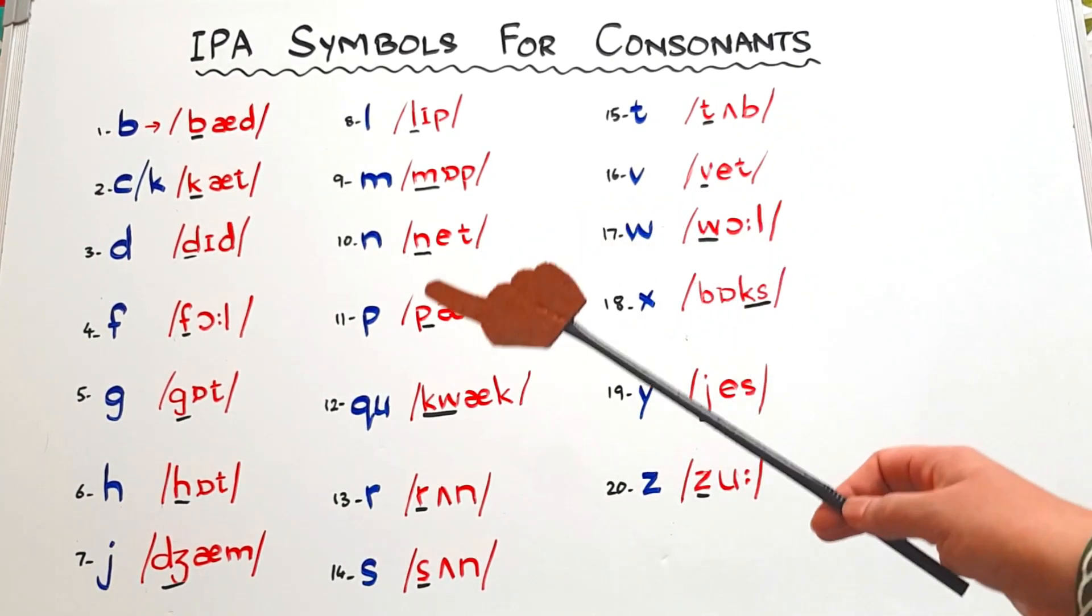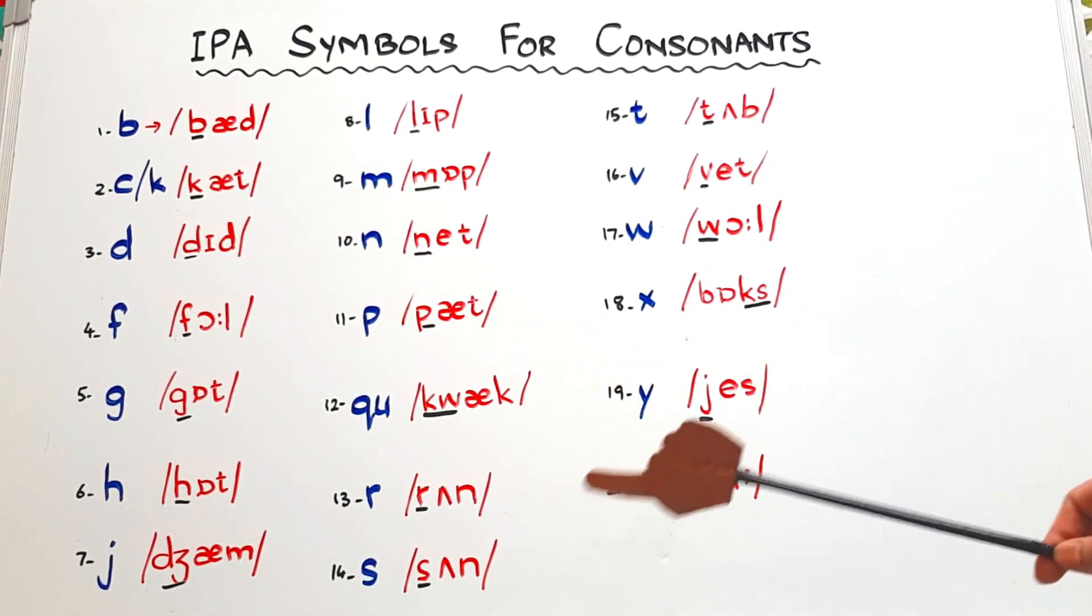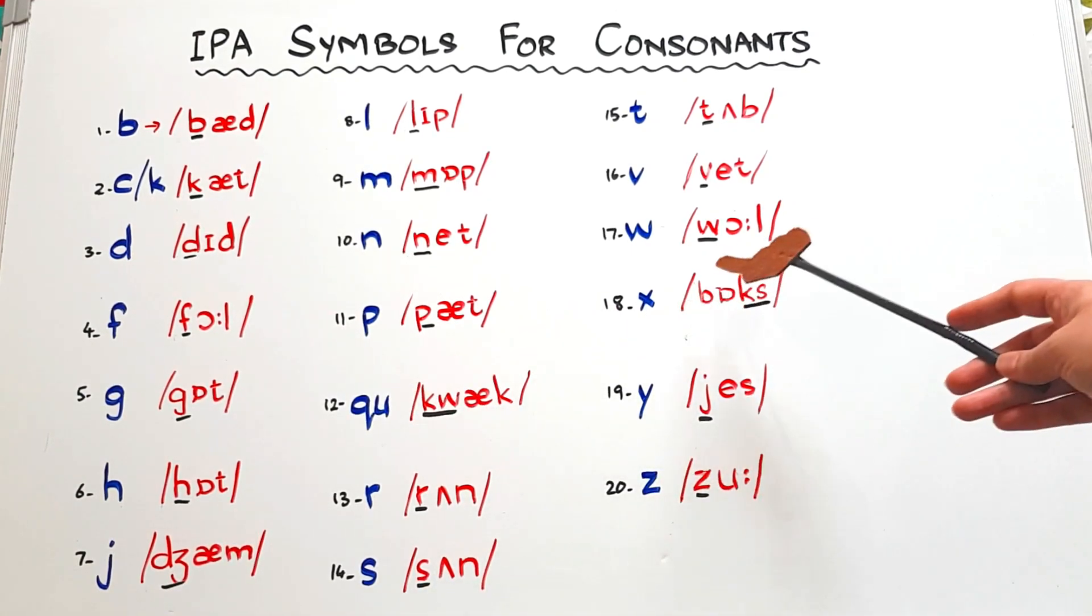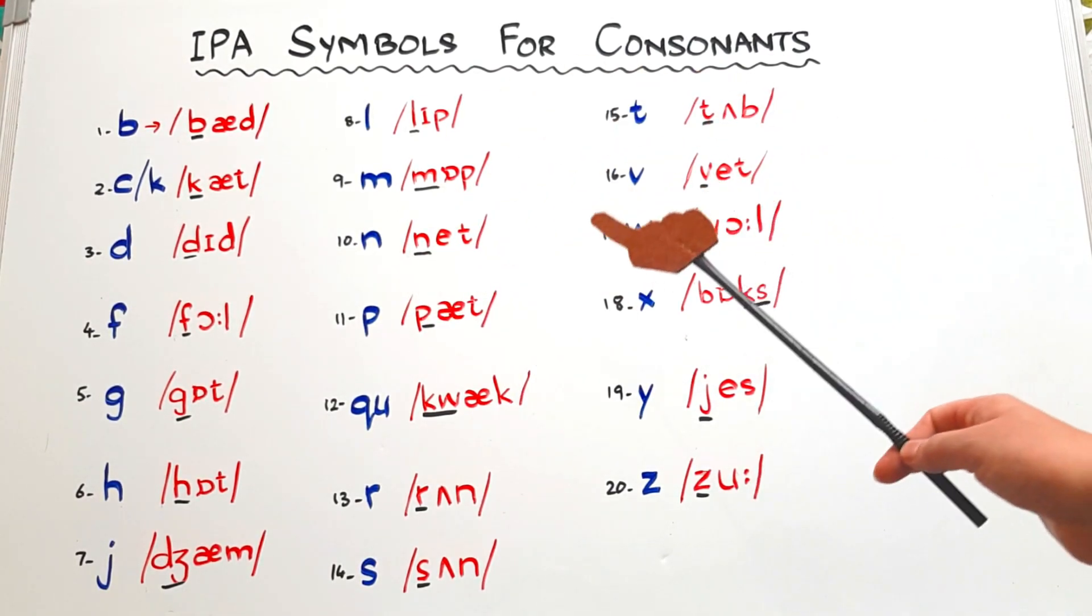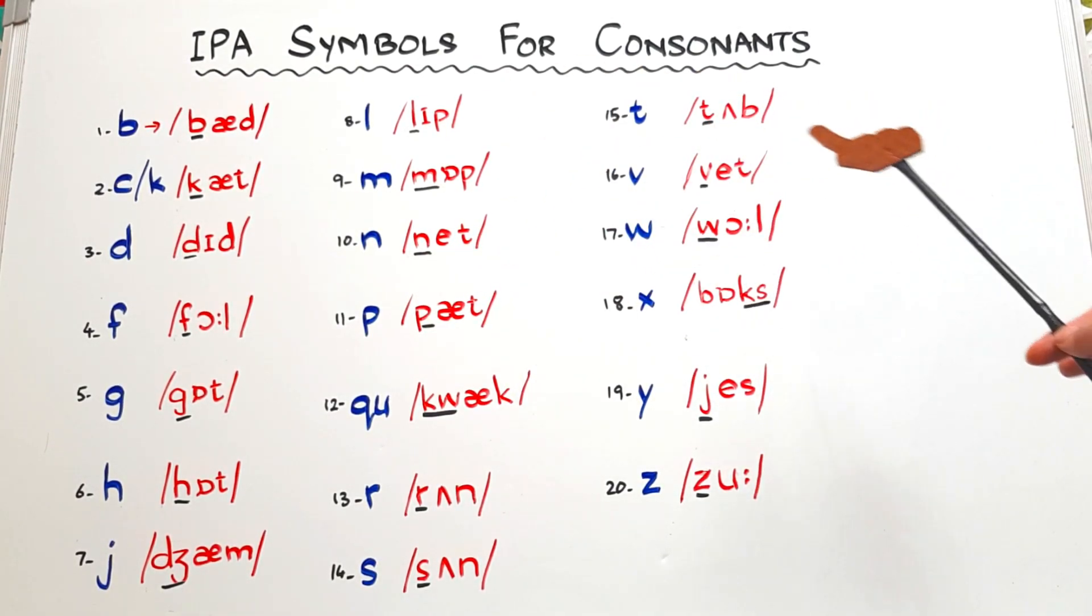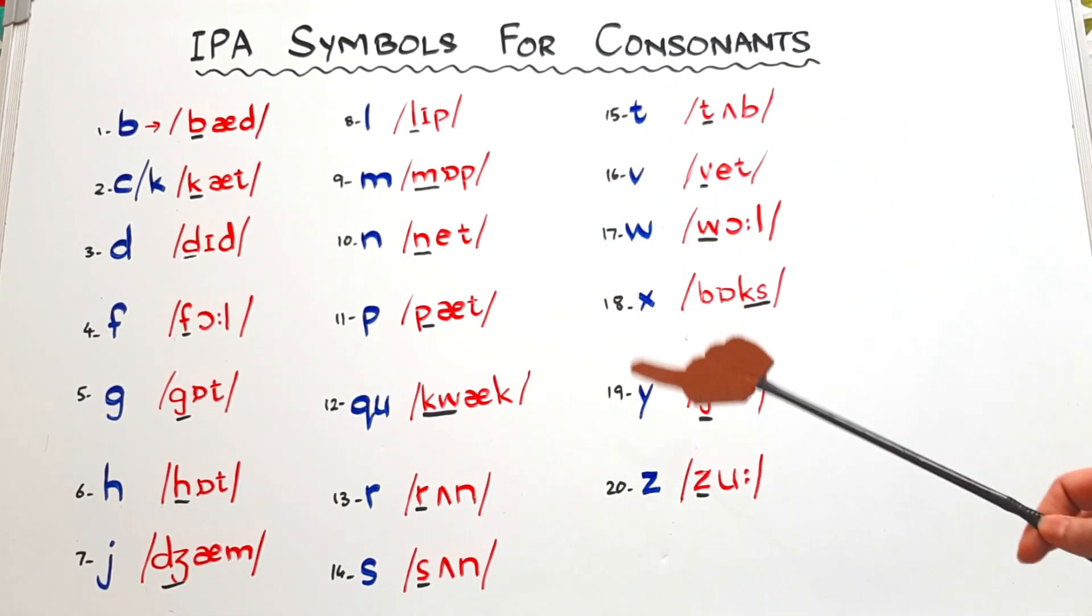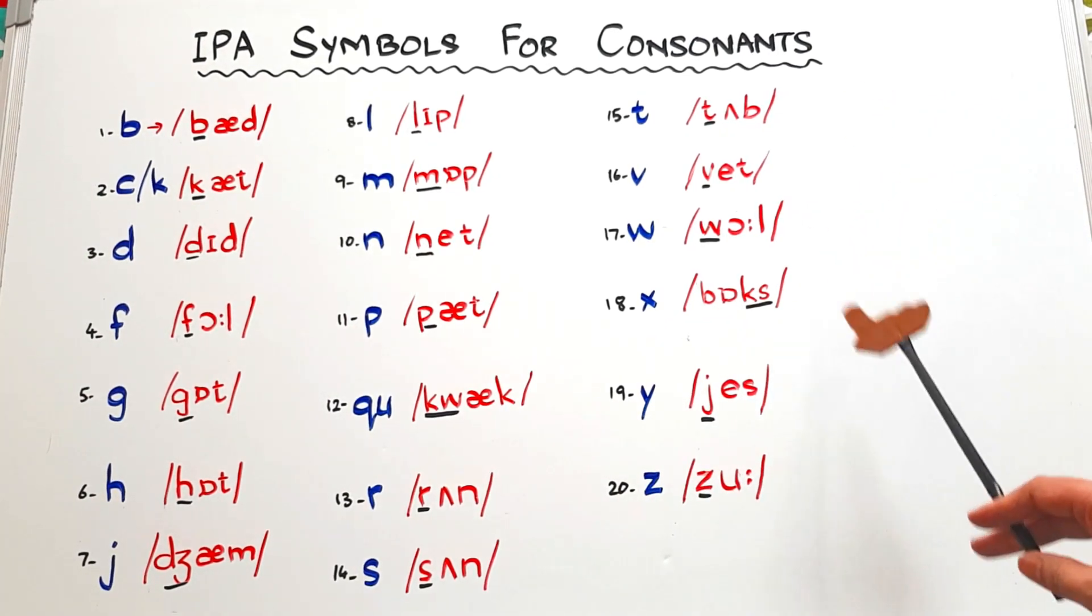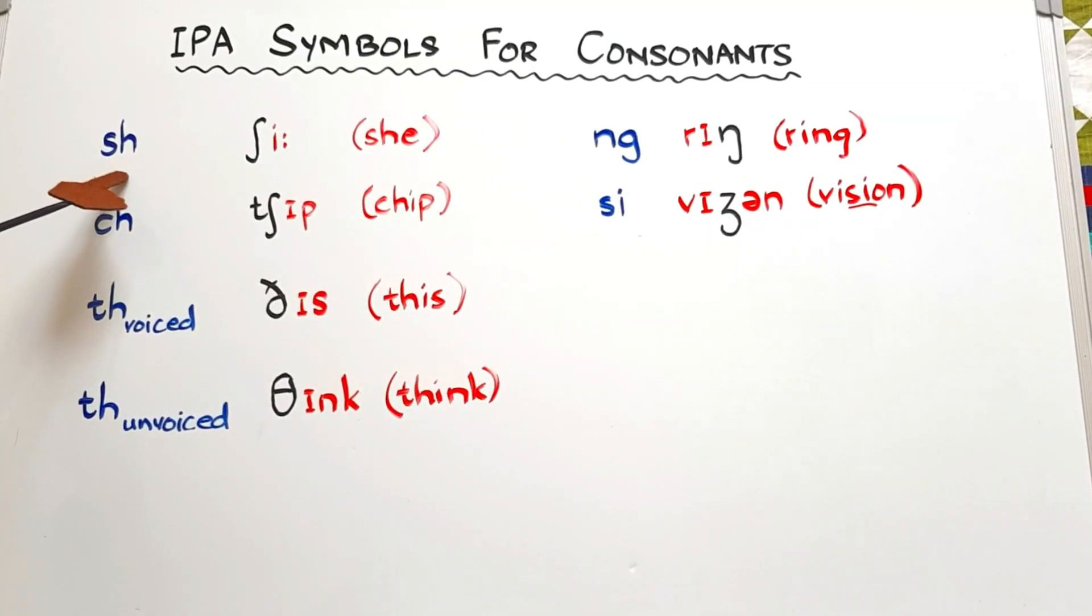So this is it. As you have seen, the consonant symbols for the single letter consonants are so simple, except for J we have something different, for Q, for X, and for Y - they are a little different. Otherwise all of the consonants have the same phonetic symbols as they have their lowercase letters. But there are some other consonant sounds too - the digraphs. Now it's time to give you the phonetic symbols for digraphs.